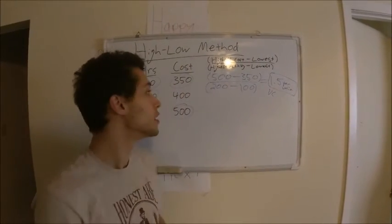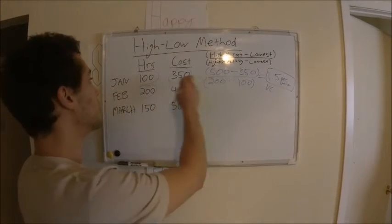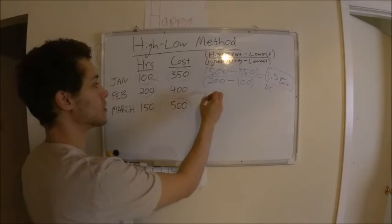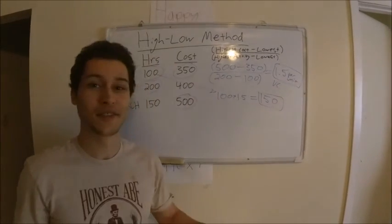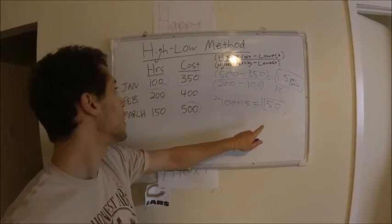And then if you want to find out your total variable cost for, let's say, January you would just do 1.5 times 100. That gives you $150 as your variable cost.